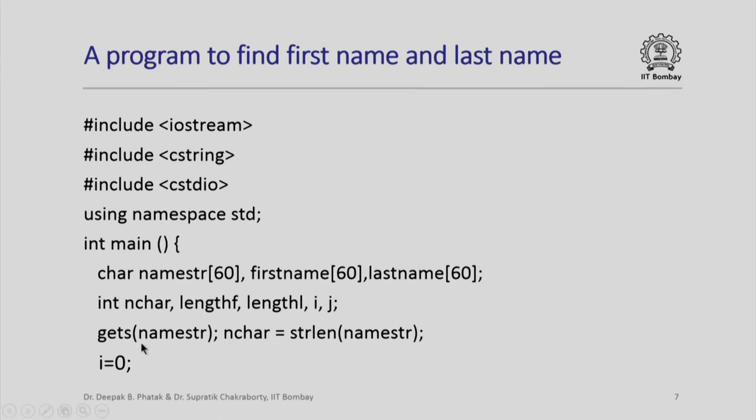First, we use gets function to read the namestr and we calculate nchar as simply equal to the string length of namestr. We want to start the scan of this namestr array. So we start with i equal to 0.